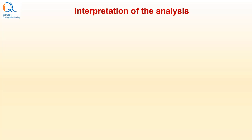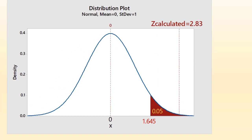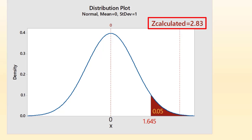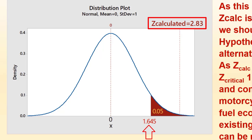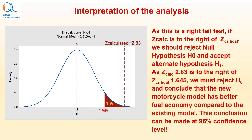Let us now interpret the analysis and the results. This is a graphical representation of the results: z calculated is 2.83 and z critical is 1.645. As this is a right-tail test, if z calculated is to the right of z critical, we should reject null hypothesis H0 and accept alternate hypothesis H1. As z calculated 2.83 is to the right of z critical 1.645, we must reject H0 and conclude that the new motorcycle model has better fuel economy compared to the existing model. This conclusion can be made at 95% confidence level.